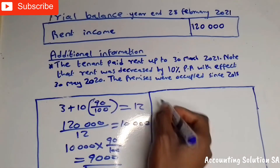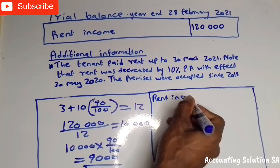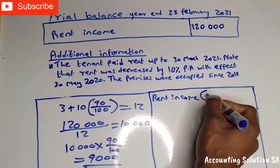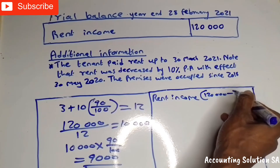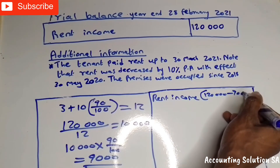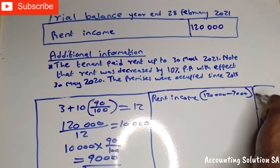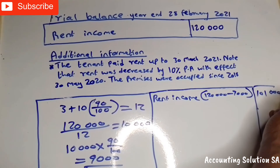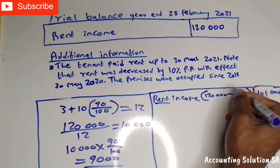Which means you go to rent income and say R120,000 minus R9,000, which gives you R111,000. This is what you record under the income statement.